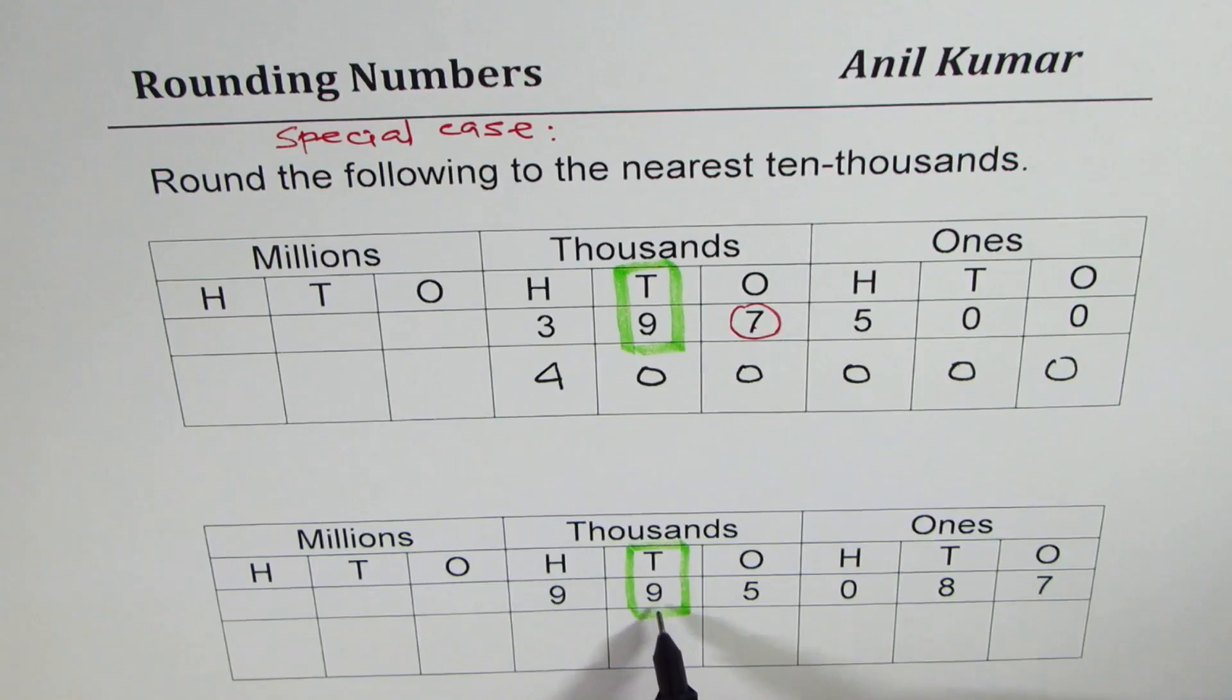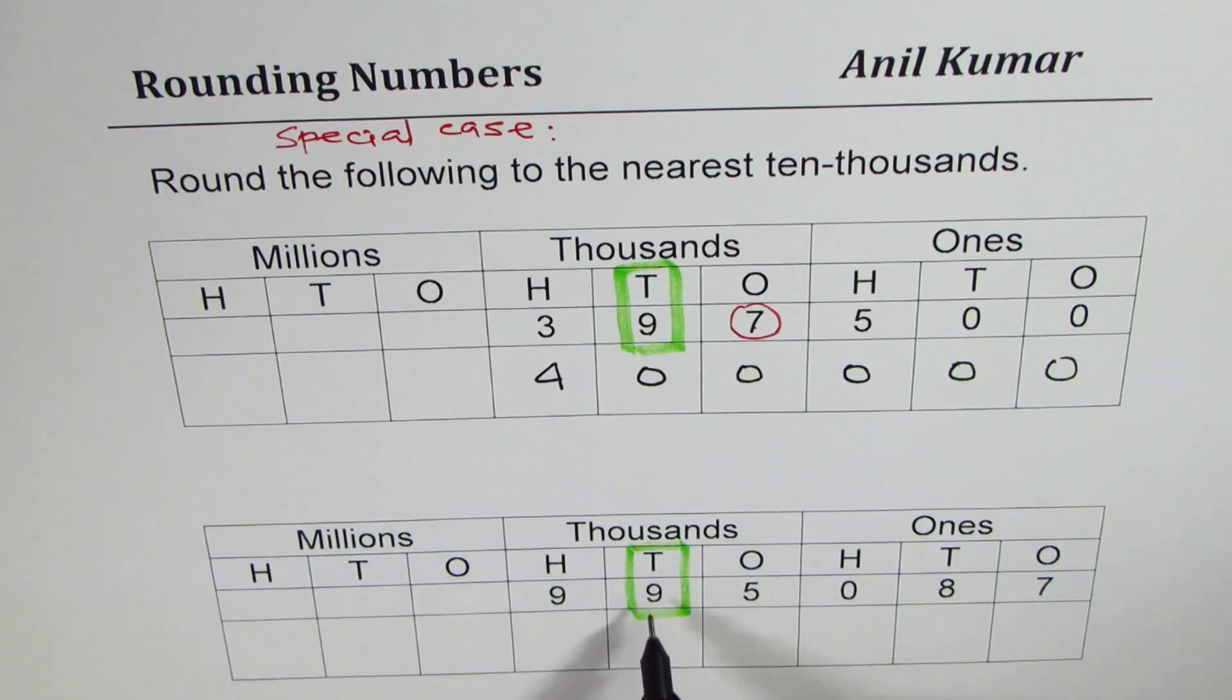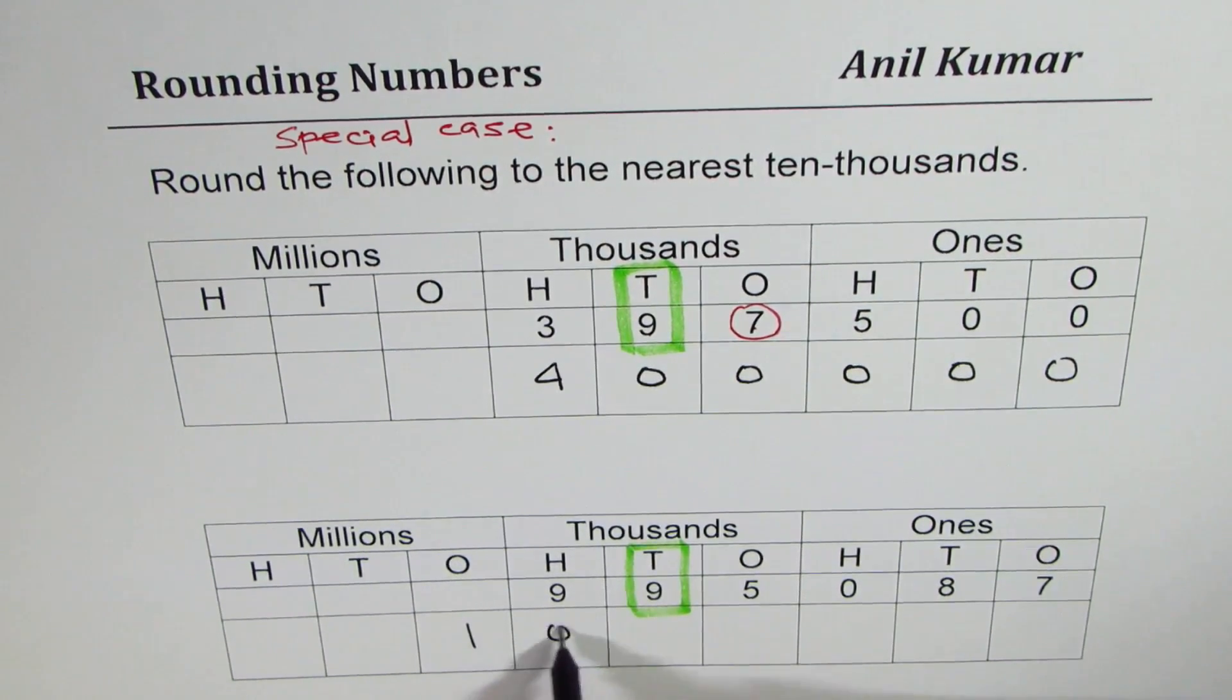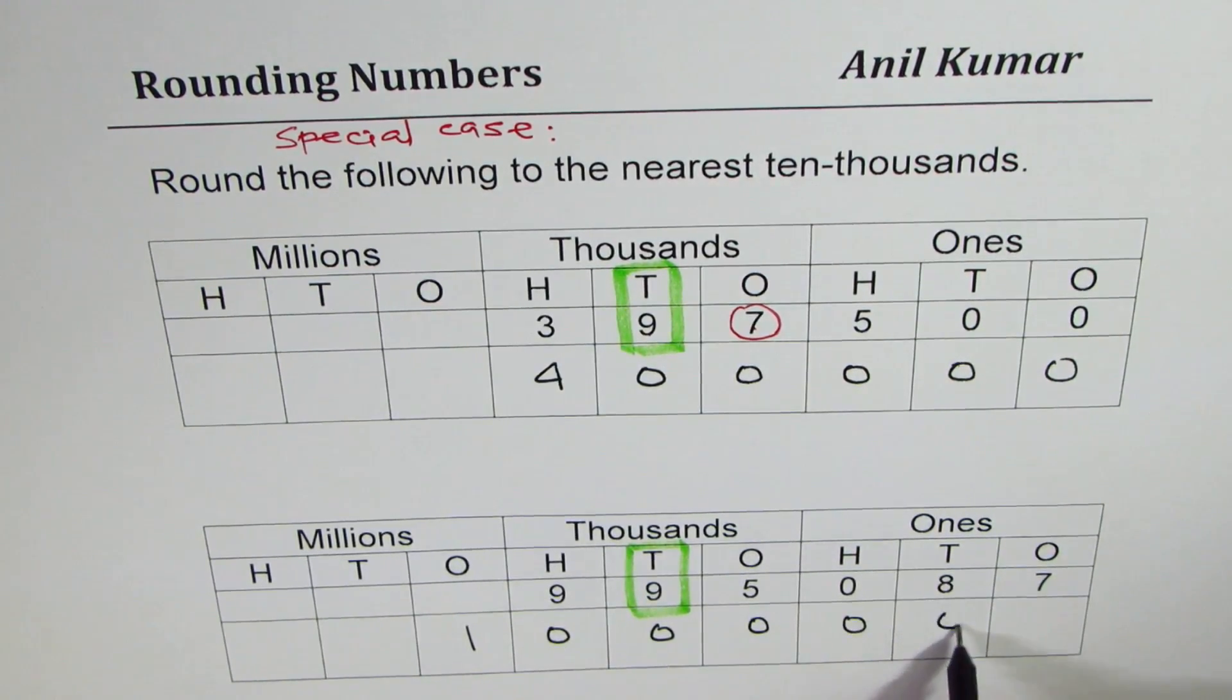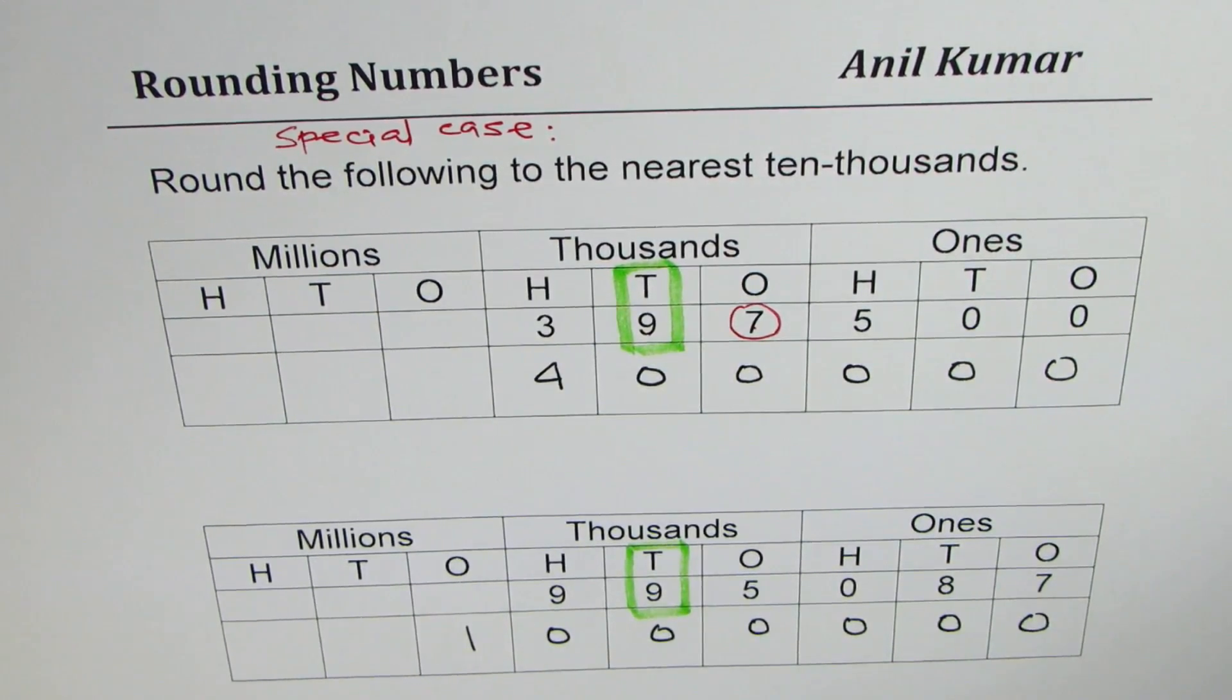Now in this case, the second case, number to the right is what? Five. If it is five or more, it rounds higher. So 99 plus one is how much? 99 plus one is 100. So here you get 100 and all these numbers will be rounded to zero. So you get 100,000 as your answer. So these two are very important examples. At times you may get confused.